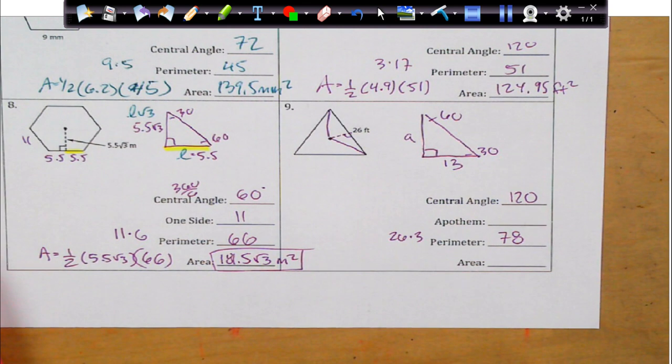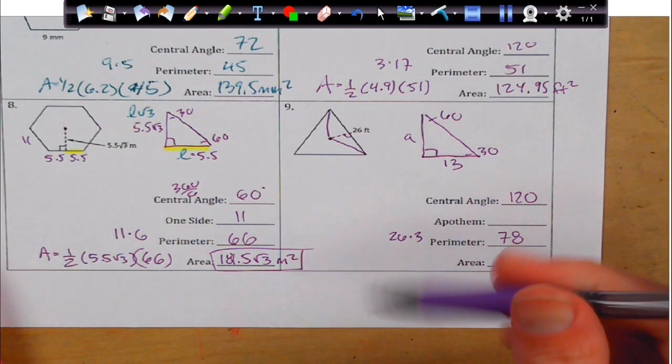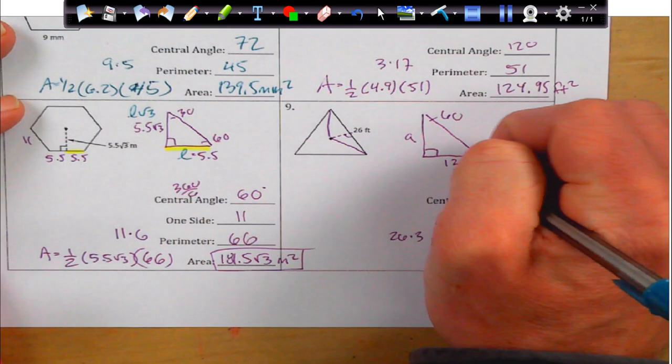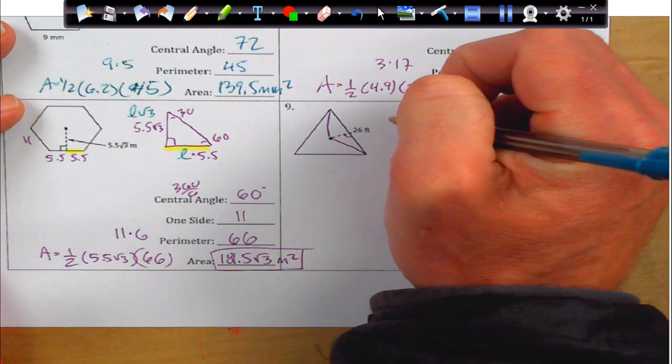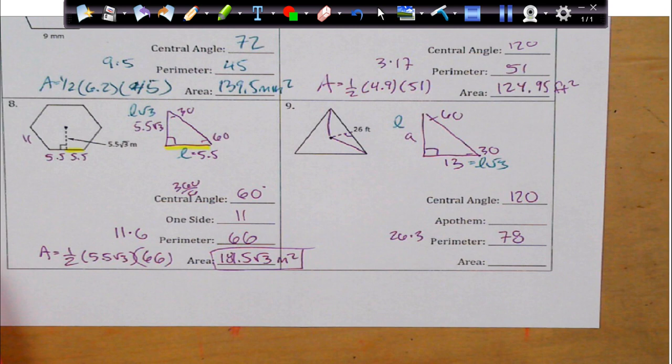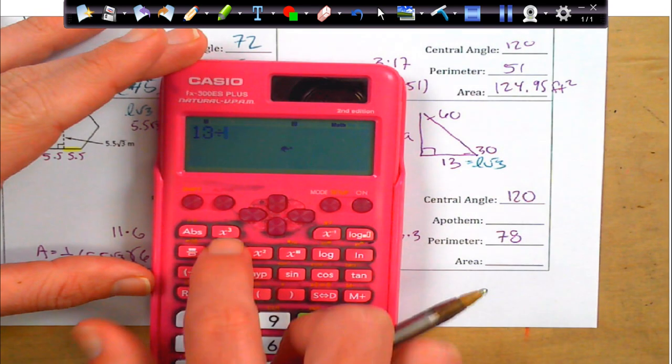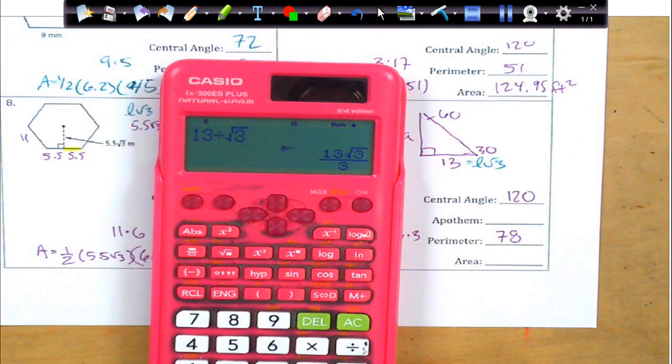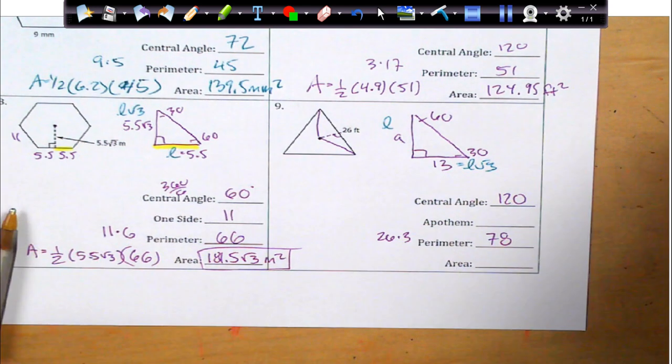But, I do have to do some research finding my apothem. And so, to find the apothem, I'm going to label my pieces. This is going to be L rad 3. And this is going to be L in this situation. They flip-flop my 30 and 60. So, to get L rad 3, I just have to divide both sides by rad 3. So, if I take 13 and I divide it by rad 3 in my calculator, I get 13 rad 3 over 3. So, that's my apothem.